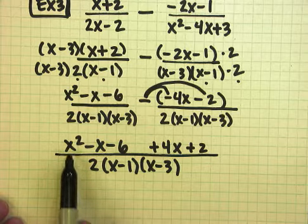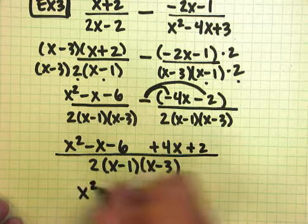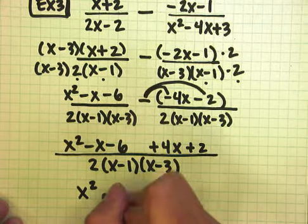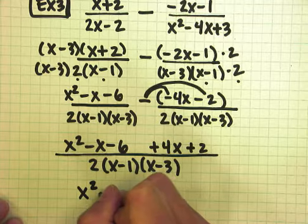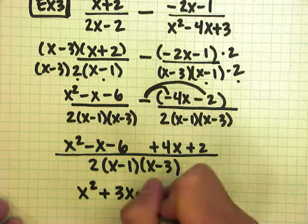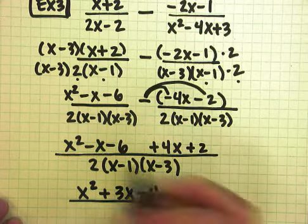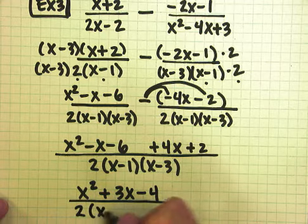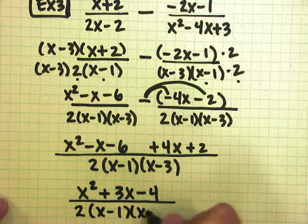Now I'm going to combine like terms. I only have one x squared. A minus x and a plus 4x give me a plus 3x. A minus 6 and a plus 2 give me a minus 4. And then I have 2 times x minus 1 times x minus 3.